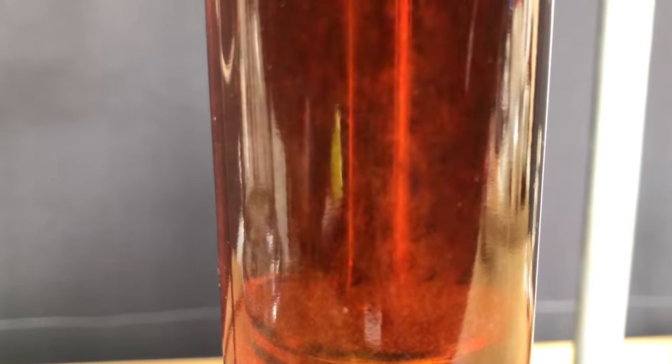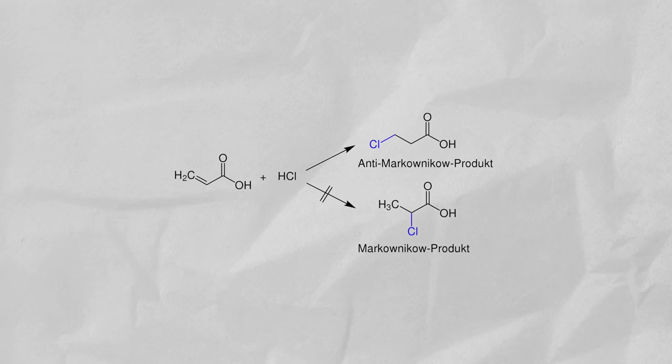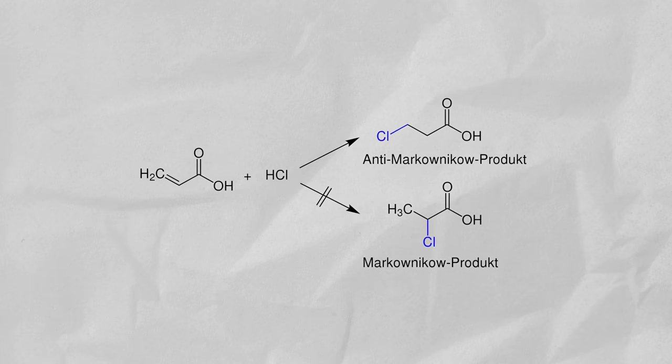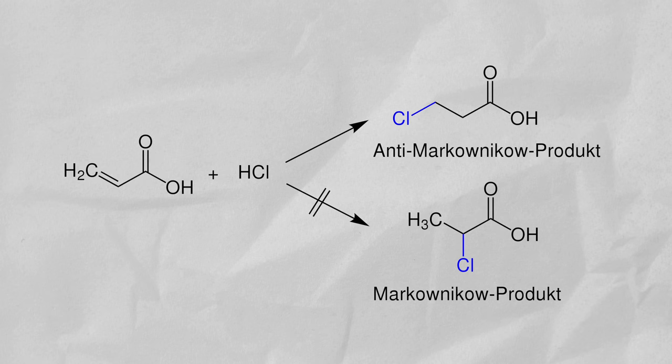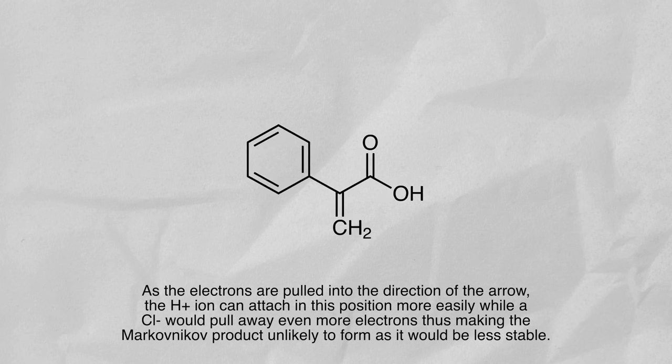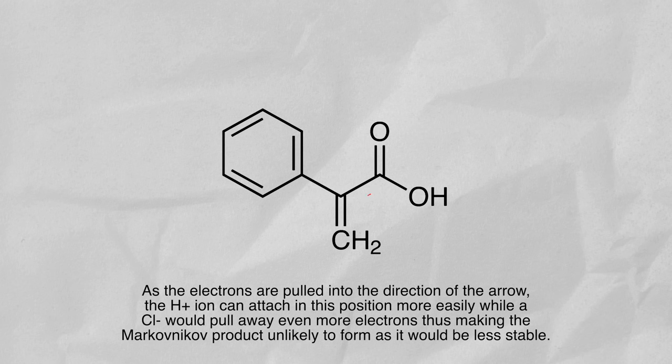You may be familiar with Markovnikov's rule. It says that during the addition of a protic acid like HCl to an asymmetric alkene, the electronegative part gets attached to the carbon with more hydrogen substituents. Well, this is not the case here. We get an anti-Markovnikov product because the oxygens of the carboxylic acid group are pulling on the electrons, and the hydrogen thus connects to the more electronegative carbon at the bottom.